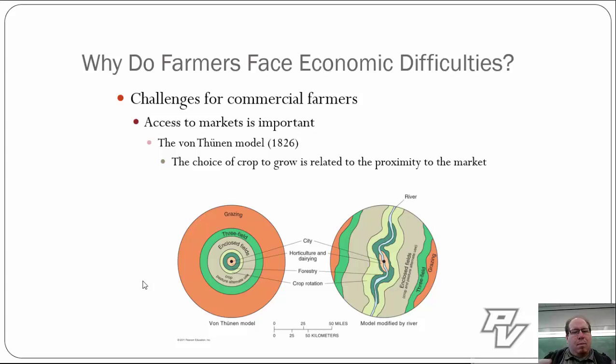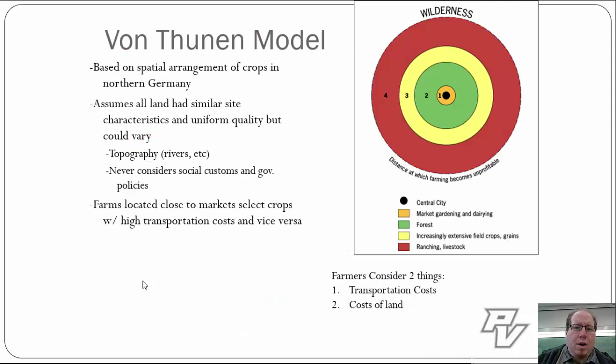The von Thunen model itself is based on the spatial arrangement of crops in northern Germany, according to von Thunen, what he saw in the early 19th century. To do this, he made an assumption — and remember, when you make these kinds of assumptions, that's not necessarily the case everywhere. The assumption is that all the land had the same basic kind of site characteristics and uniform quality, but it could vary based on its topography and the physical geography of the region.